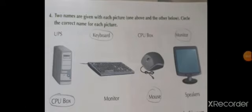Let's move to page number 21, question number 4: Two names are given with each picture — one above and one below. Circle the correct name for each picture. The first picture is of CPU box, so circle CPU box. Second picture is of keyboard, so circle keyboard. Third picture is of mouse, so circle mouse. Fourth picture is of monitor, so circle monitor.